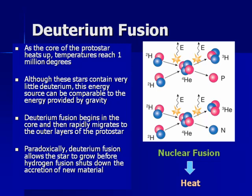The first thing to fuse is a heavy isotope of hydrogen known as deuterium. There's not a lot of deuterium, so there's not a lot of fuel from this. Deuterium fusion is the first to kick in, then rapidly migrates to the outer layers of the protostar. Interestingly, deuterium fusion provides extra energy and extra heat, allowing the star to grow before hydrogen fusion shuts down that growth — basically it delays hydrogen fusion and allows matter to keep falling in.